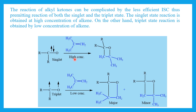The singlet state reaction is obtained by a high concentration of alkene. If we have a high concentration of alkene, then the alkyl ketone behaves as a singlet and only one major product is formed. On the other hand, if alkene concentration is low, then the alkyl ketone behaves as a triplet, and similar to aromatic ketones, two products are obtained.